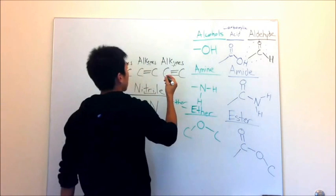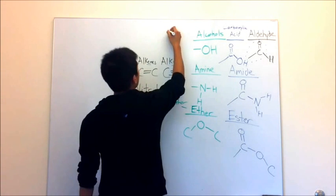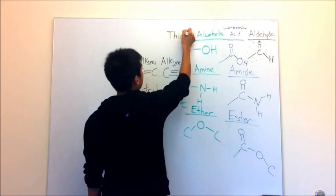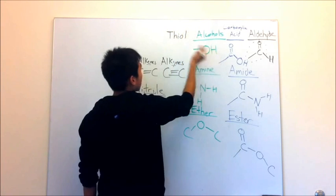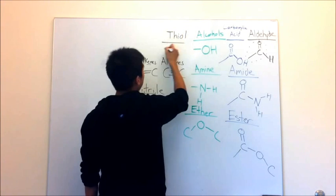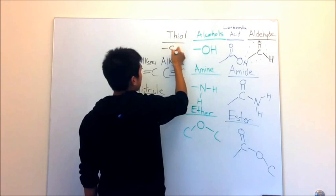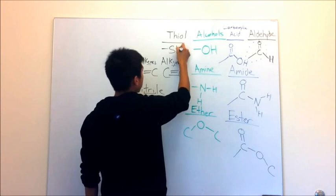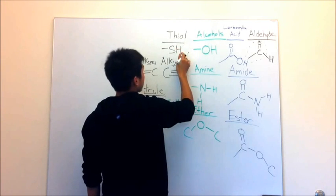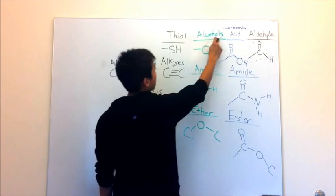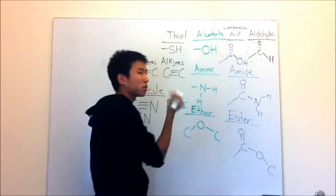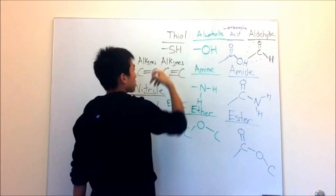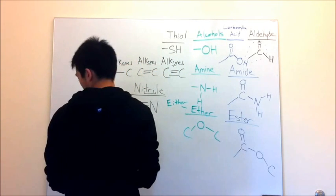Thiols. Thiols are basically the same thing as alcohols, but you have a sulfur instead of the oxygen atom. And they both end the same way — so thiol has the same structure as alcohol, just with S replacing O.